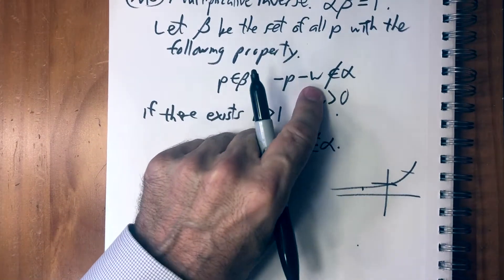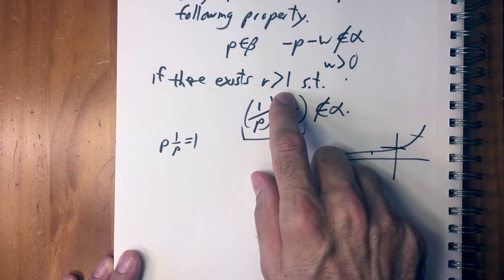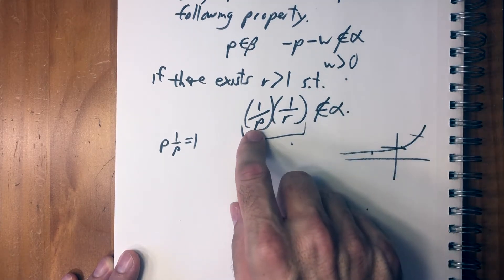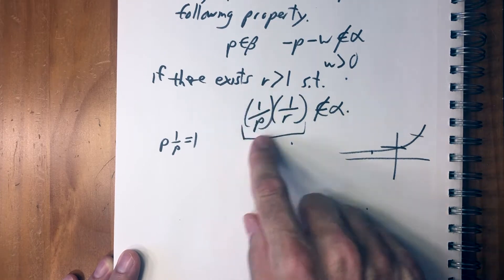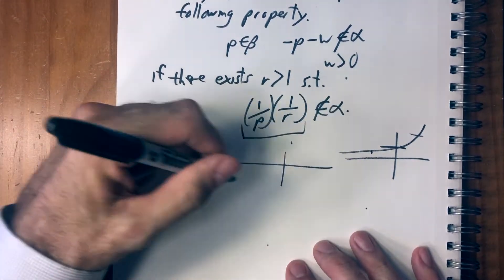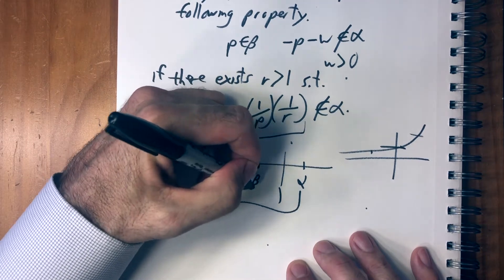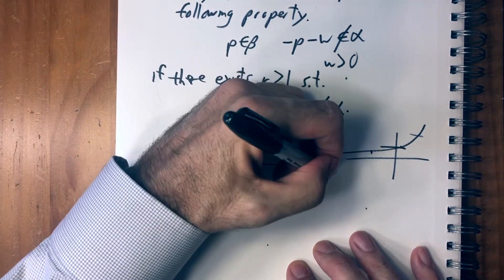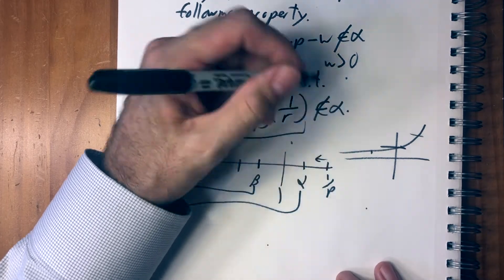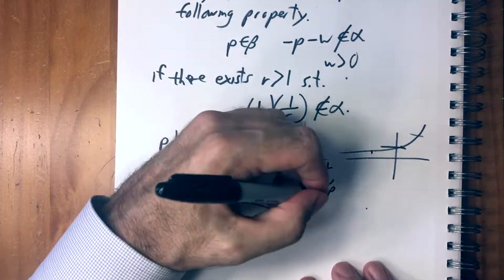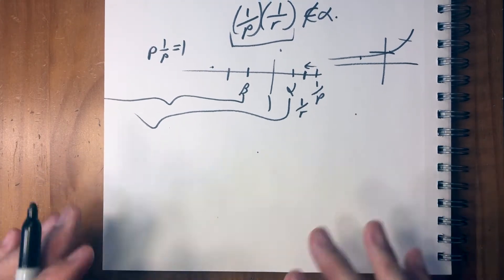Anyway, it means the same thing: we take some r bigger than the identity element, and if you take the inverse of the number you're looking at and multiply it by the inverse of r, you're still not going to be in alpha. So if we have one here with alpha here and beta here, if we have p here then one over p is up here, and we multiply it by something smaller than one — there exists an r such that the product is smaller than one over p but still outside of alpha.